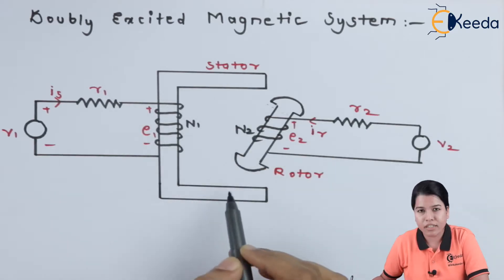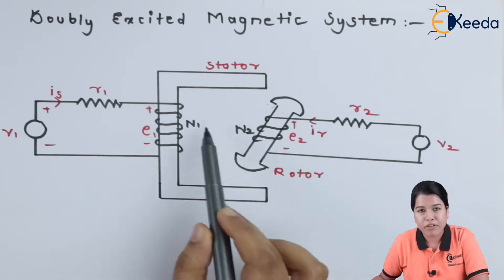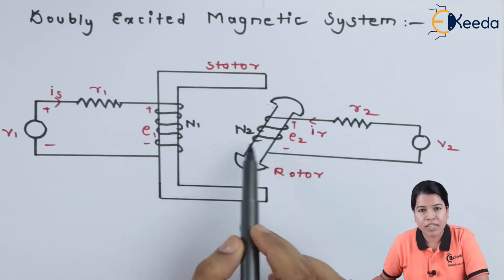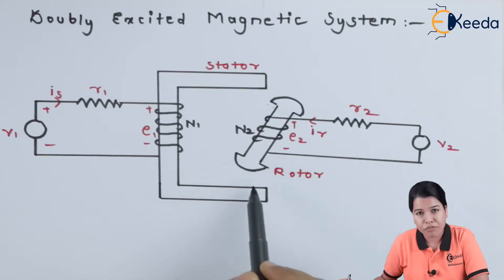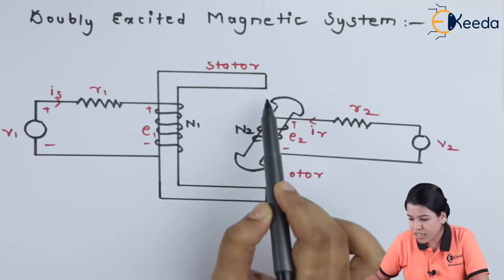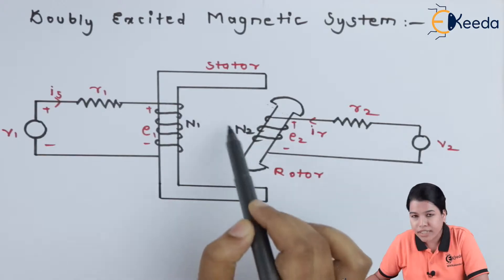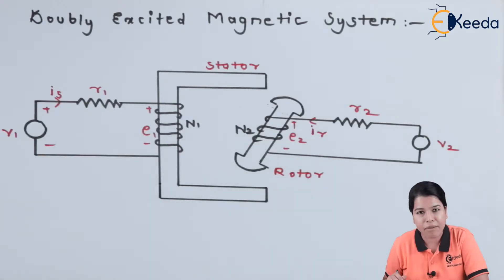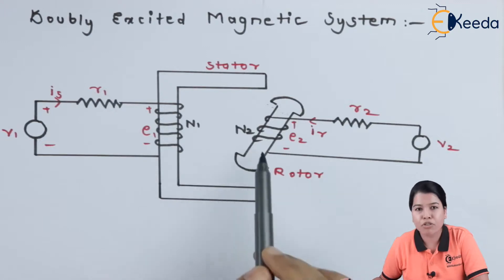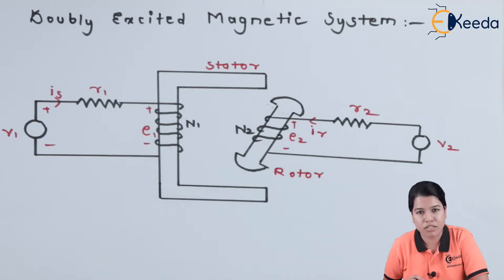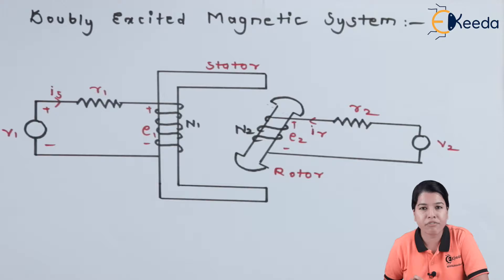There is one stator and one rotor. Between the stator and rotor, an air gap is present. The air gap is less in one area and more in another area — hence the air gap is non-uniform. This type of system is called a salient pole system. The salient pole system is the system in which the air gap between stator and rotor is non-uniform.